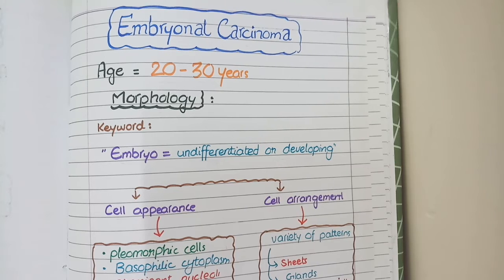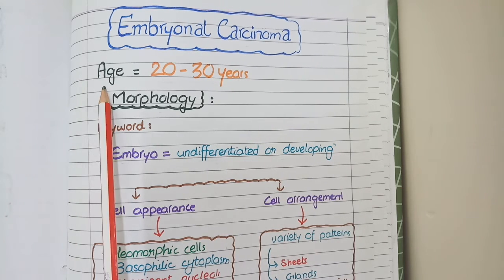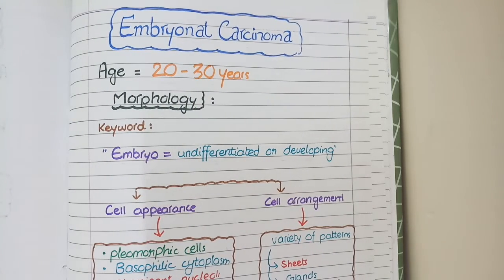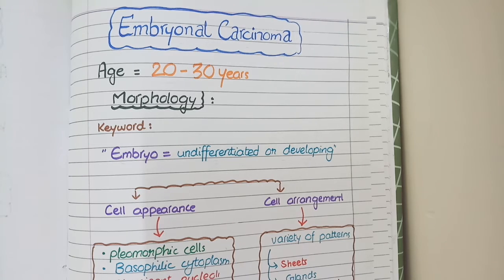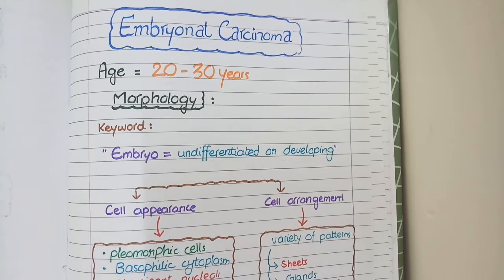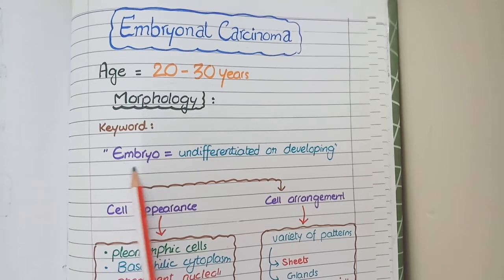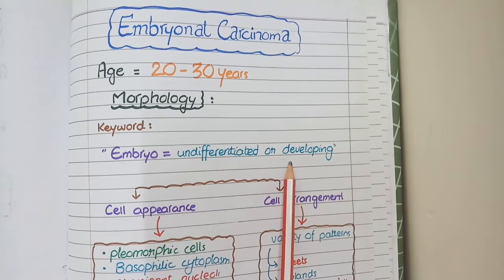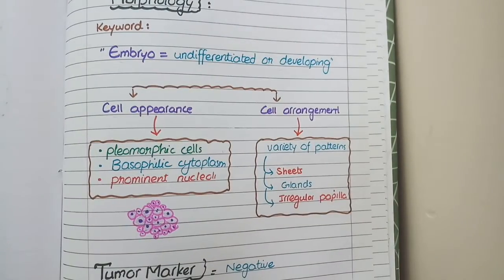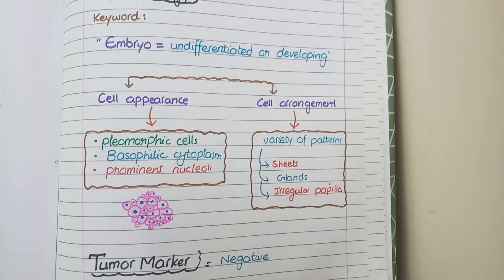Embryonal carcinomas occur in the age group of 20 to 30 years, within the early spectrum of the typical 15 to 45-year range. For morphological features, the keyword is 'embryo,' meaning undifferentiated or developing. Keeping undifferentiated or developing in mind will help recall the morphological features of embryonal carcinoma.